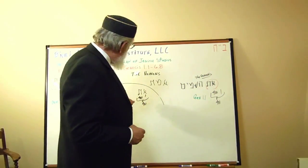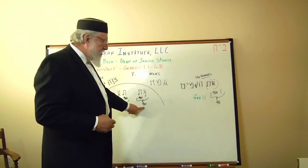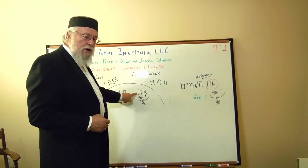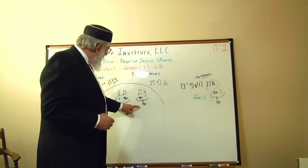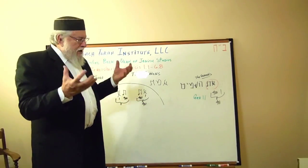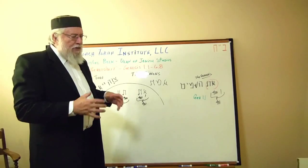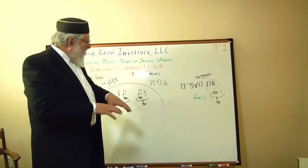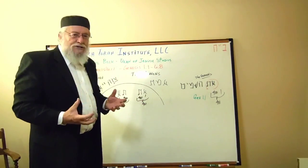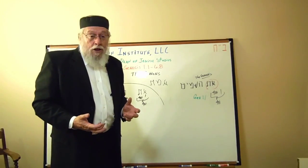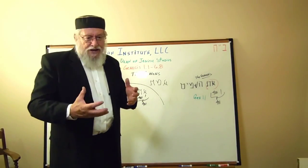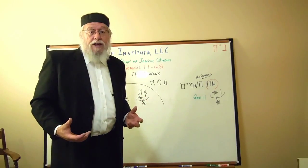In the Gematria we have 401. Aleph is one and the Tav is 400 — 401. This all-inclusiveness means God knows everything. There is nothing that can be hidden from God. The Torah — it's all there. We don't understand all the mysteries and all the hidden things, but we do receive some revelations, and hopefully today, God willing, we'll get one or two — or more.